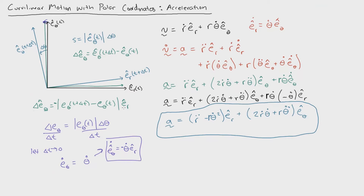The derivation is a little complicated when it comes to finding how the unit vectors change over time, but really all you're doing is finding the arc length, finding how e_r changes over time, relating those two equations, and taking the derivative to find what e_theta_dot and e_r_dot mean. In the next couple of videos, we'll go through examples on how to use these equations to make it more practical.